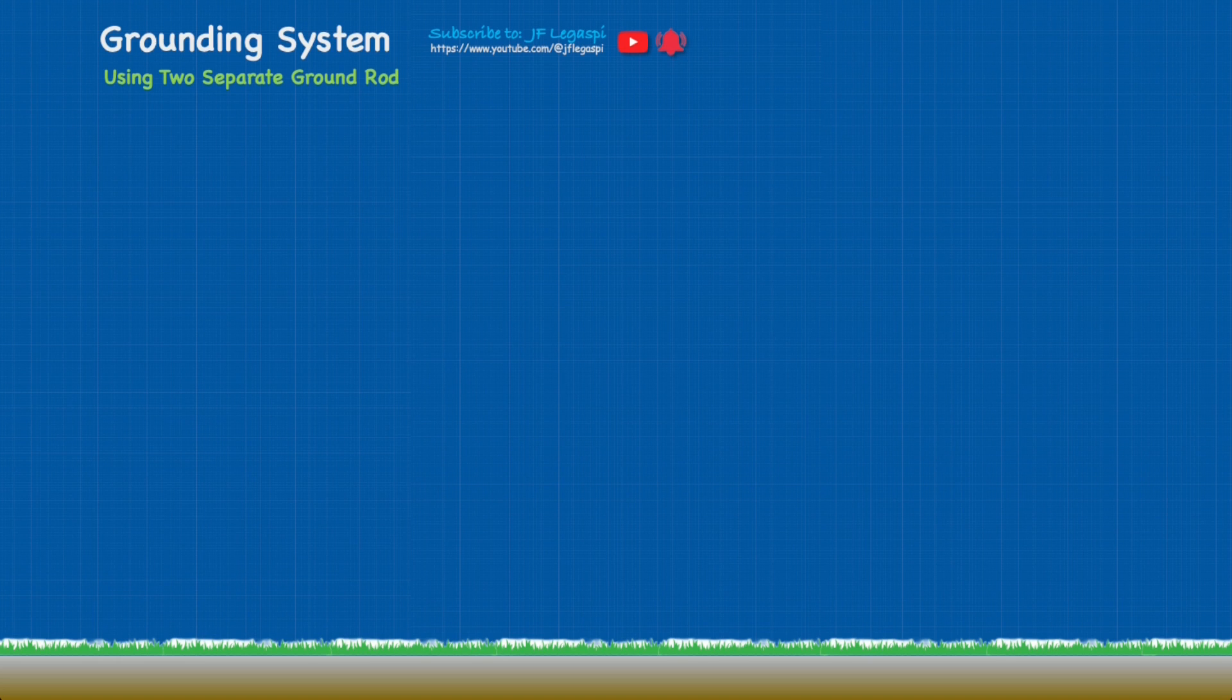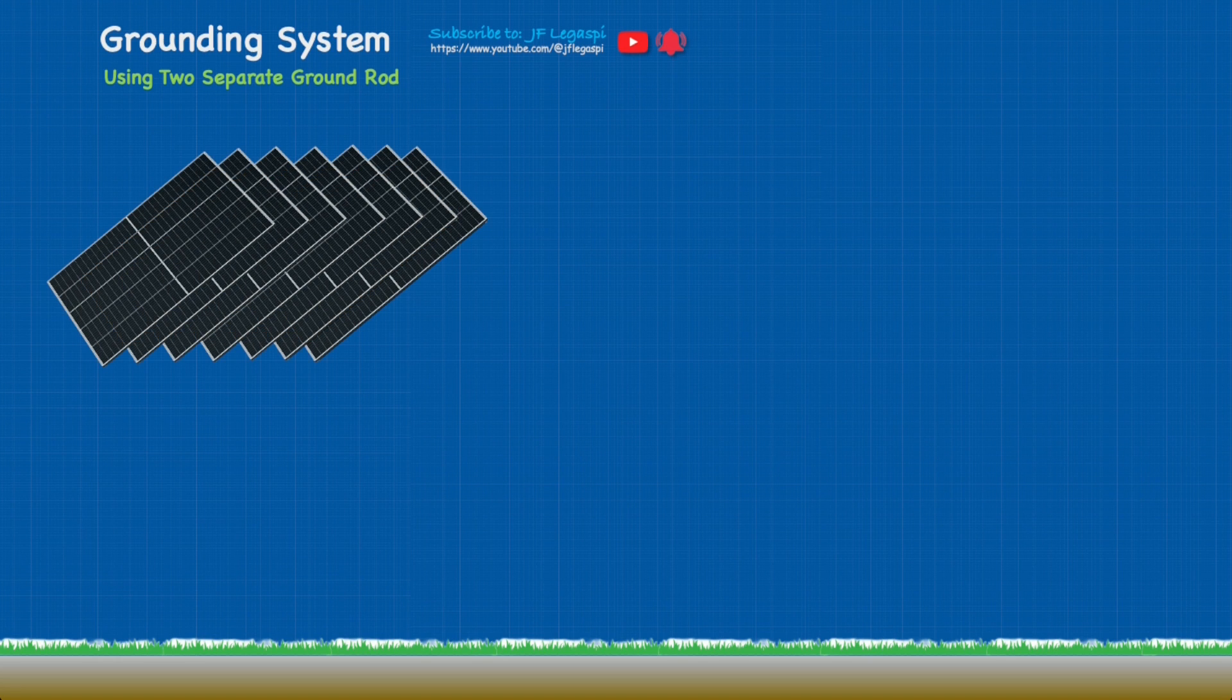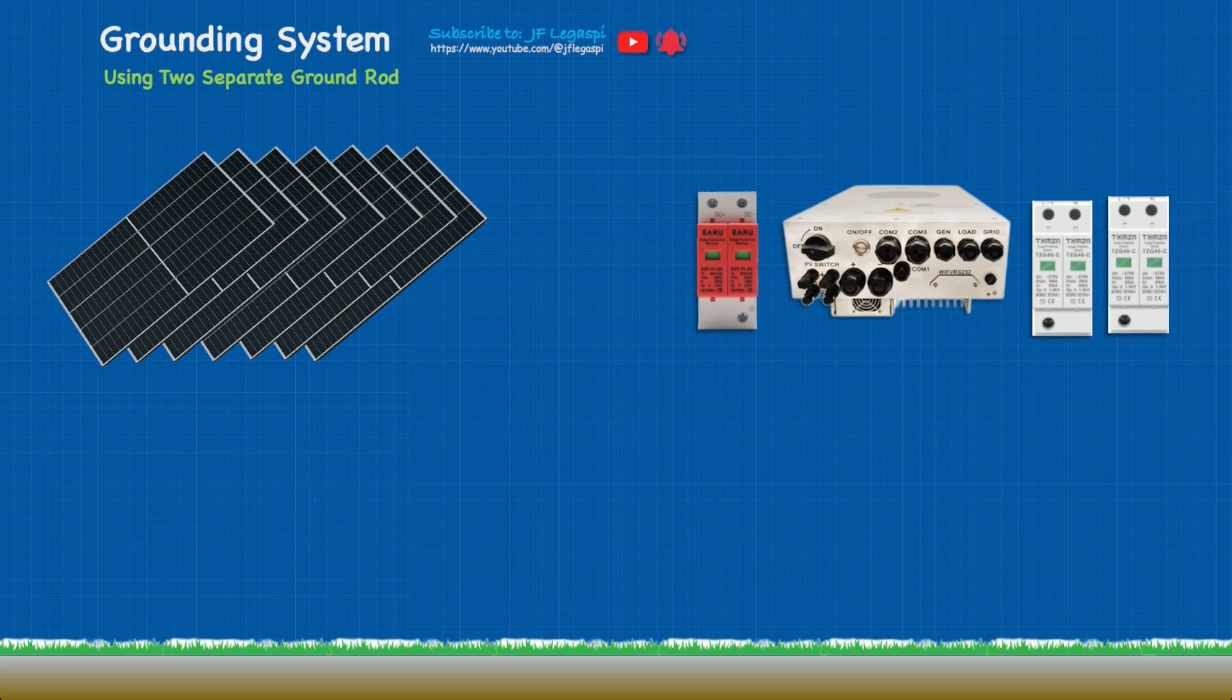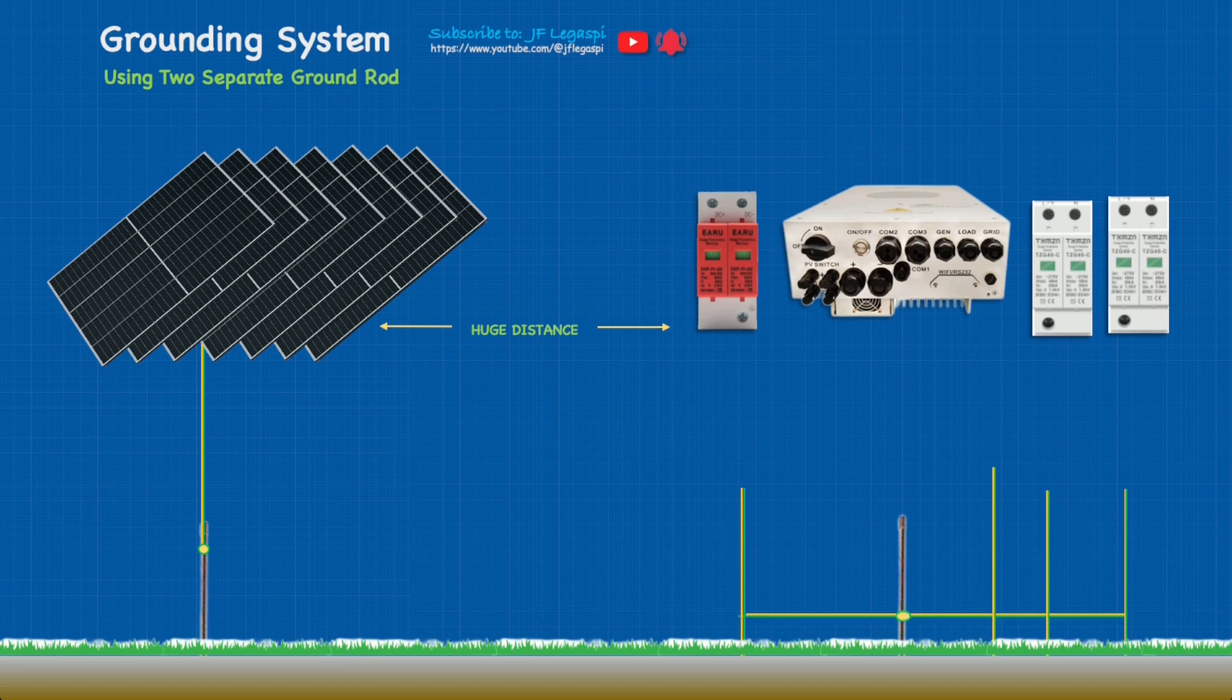Now let's take a look at using two separate ground rods. We have our PV array on this side and the main system on this side as well. If there is a huge gap between these two, huge distance, better to have a ground rod for your PV array and another one for the main system.